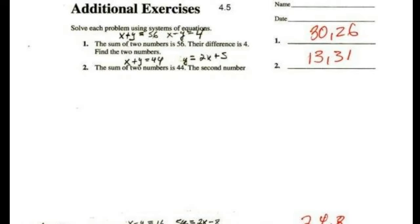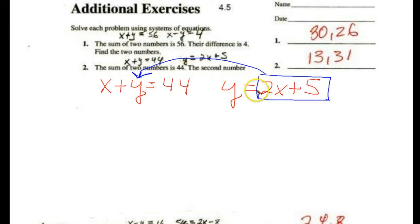Now, for number two, we're going to do the same thing. This one's set up a little differently. So we have x plus y equals 44. That's in standard form, this is in slope-intercept: y equals 2x plus 5. Well, we have a value for y in terms of x. So we're going to take this value for y and put it into the other equation where y is, in a sense, substituting this value for the y.